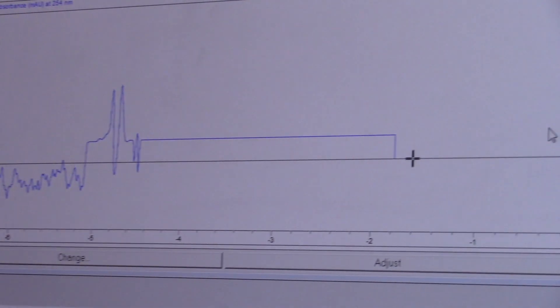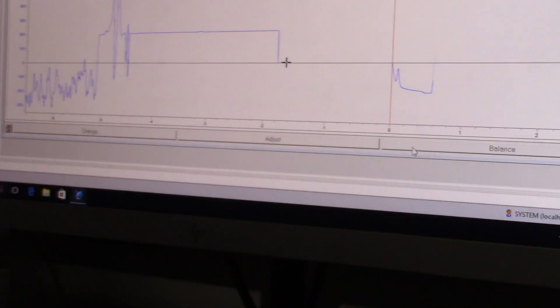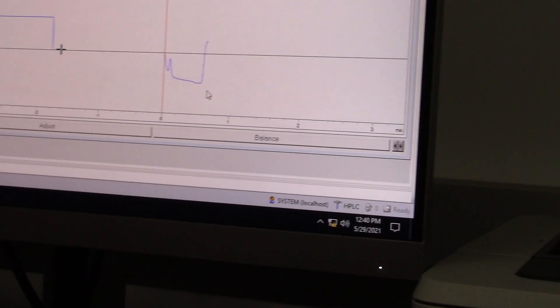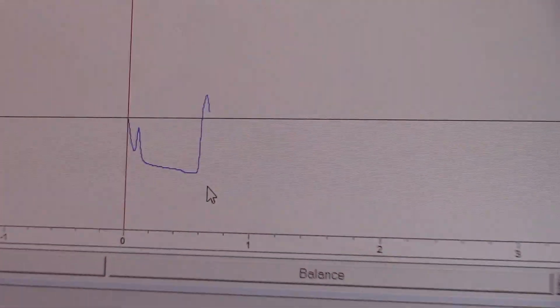As the HPLC is running, you will see the graph go up and down. A peak indicates a compound or analyte that is exiting or eluting. This would be the time to collect a fraction if you're trying to collect smaller pieces of your sample.